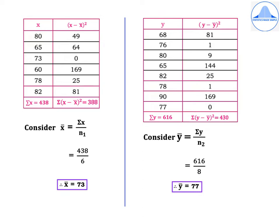Form another table with the Y values — the sales for the second sample: 68, 76, 80, 65, 82, 78, 90 and 77. Summation Y is equal to 616. Y-bar equals summation Y divided by N2, which is 616 divided by 8, equal to 77. Calculating (Y minus Y-bar)²: 68 minus 77 gives −9, and (−9)² is 81. The remaining values are 1, 9, 144, 25, 1, 169, and 0. Therefore summation (Y minus Y-bar)² is equal to 430.